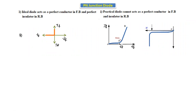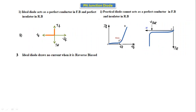In the reverse bias characteristics, a very small leakage current flows in the reverse direction. This is the reverse current Ir, plotted against the reverse voltage. Up to the reverse breakdown voltage VBR, a small current flows. After reaching this voltage, if we increase the voltage further the reverse current increases drastically. The ideal diode draws no current when it is in reverse bias — the reverse current is zero.